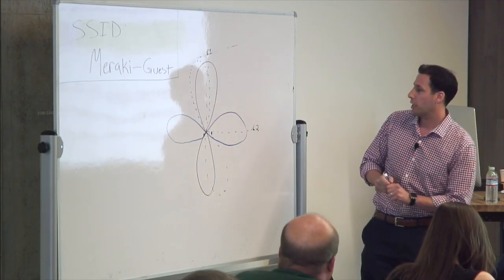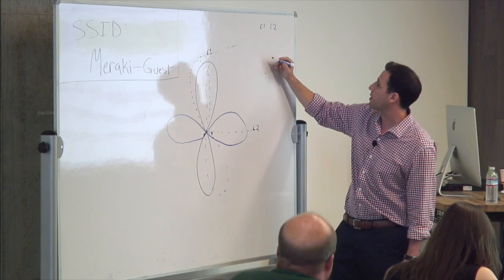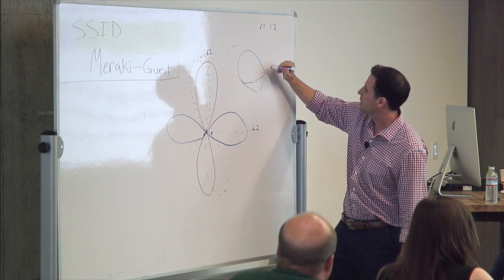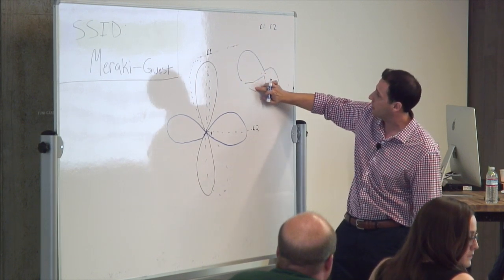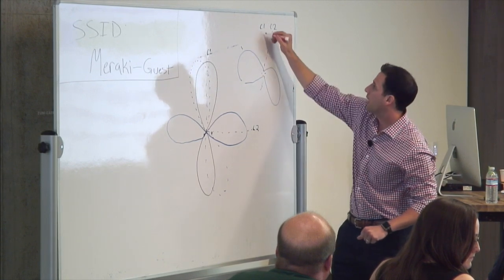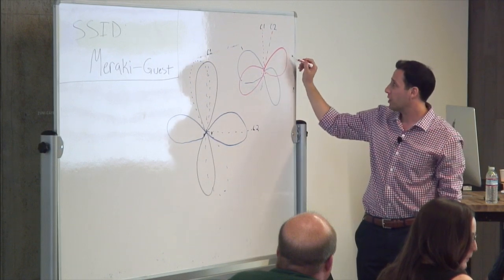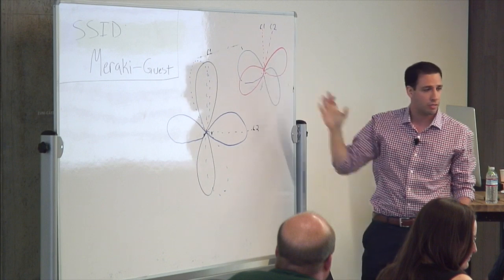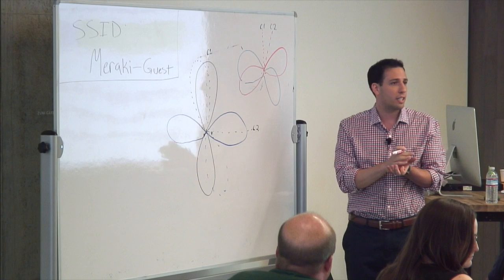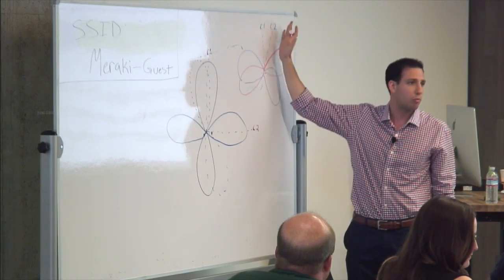Question: what degree of separation do you need between clients? That's a good point — this is a totally contrived scenario. If client one and client two are close to each other, you still need to null client two with the beam pattern you're sending to client one. You're still managing to null both clients, but you're no longer beamforming toward them at all — so you won't see interference from other streams, but you'll see a very low RSSI at the client, resulting in a much lower data rate versus just beamforming individually to each client.